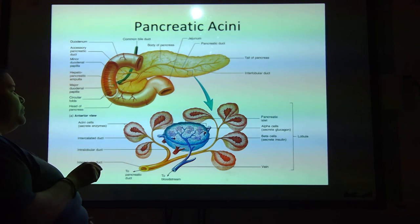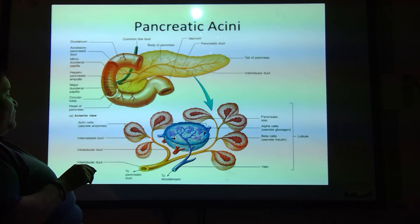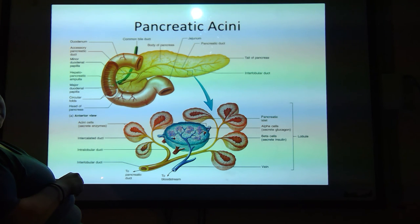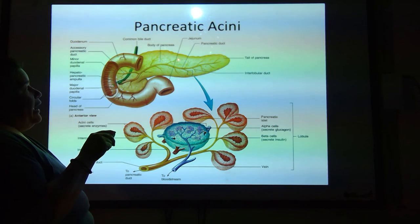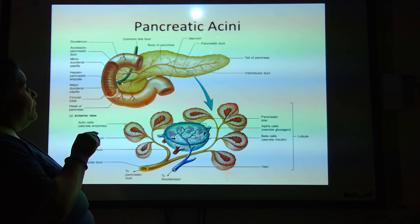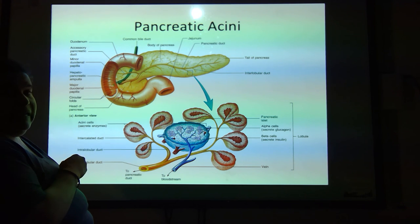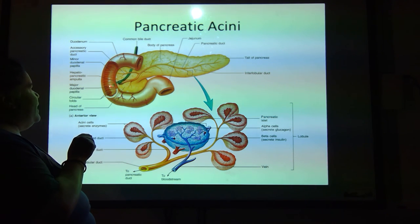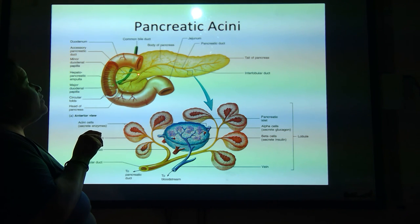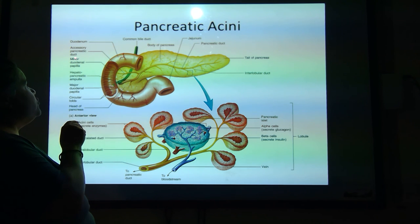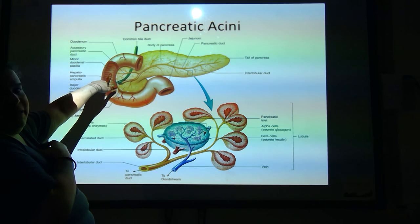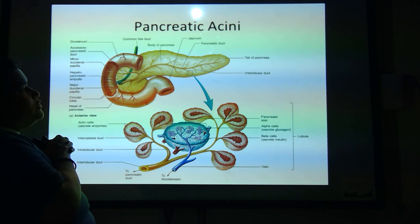Duct is just a fancy way of saying tube. You've got these intercalated ducts, merging together into an intralobular duct, and then it becomes the interlobular duct. And as they come in, they eventually merge with this pancreatic duct that also merges with the common bile duct — see that? It's green, it carries bile. These have this major duodenal papilla, where they basically dump their product into the duodenum. There's a secondary duct called the accessory pancreatic duct that has a minor duodenal papilla, a smaller opening that will also dump product into this.